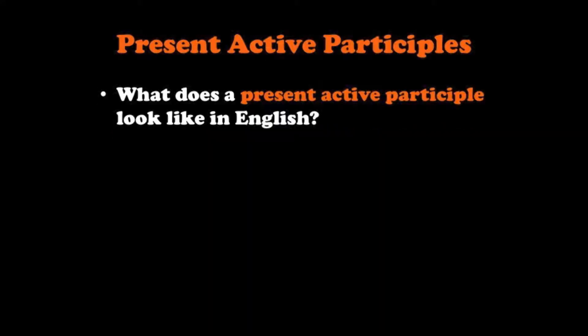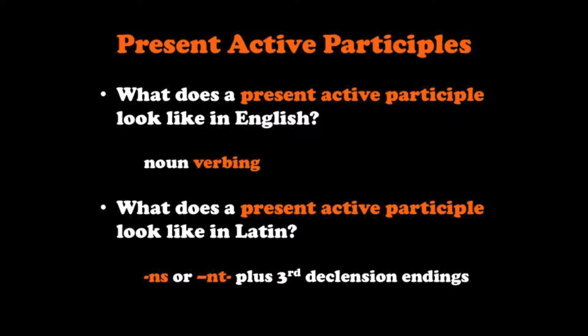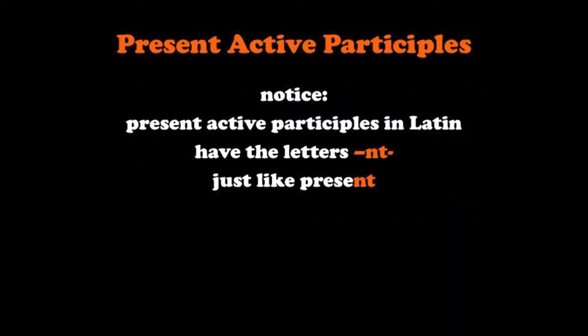Present active participles. What does a present active participle look like in English? Noun verbing. What does a present active participle look like in Latin? The present active participle in Latin will end in the letters NS or NT followed by a third declension ending. The present active participle is easily identifiable by those letters NT, and it can help to remember that NT is also in present.